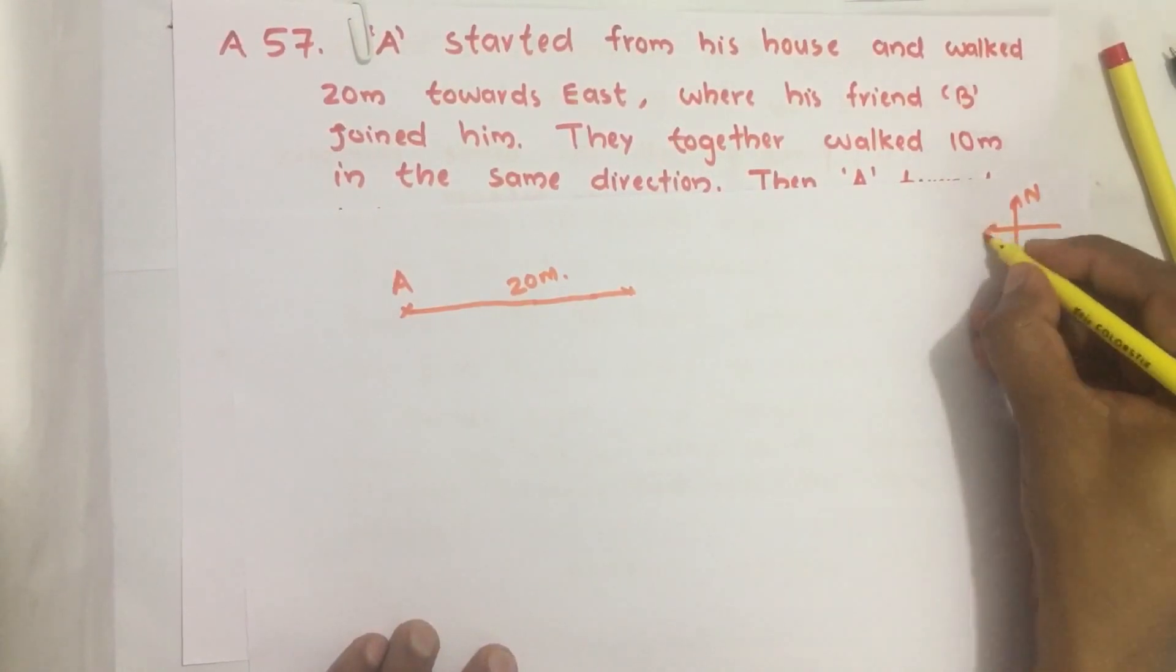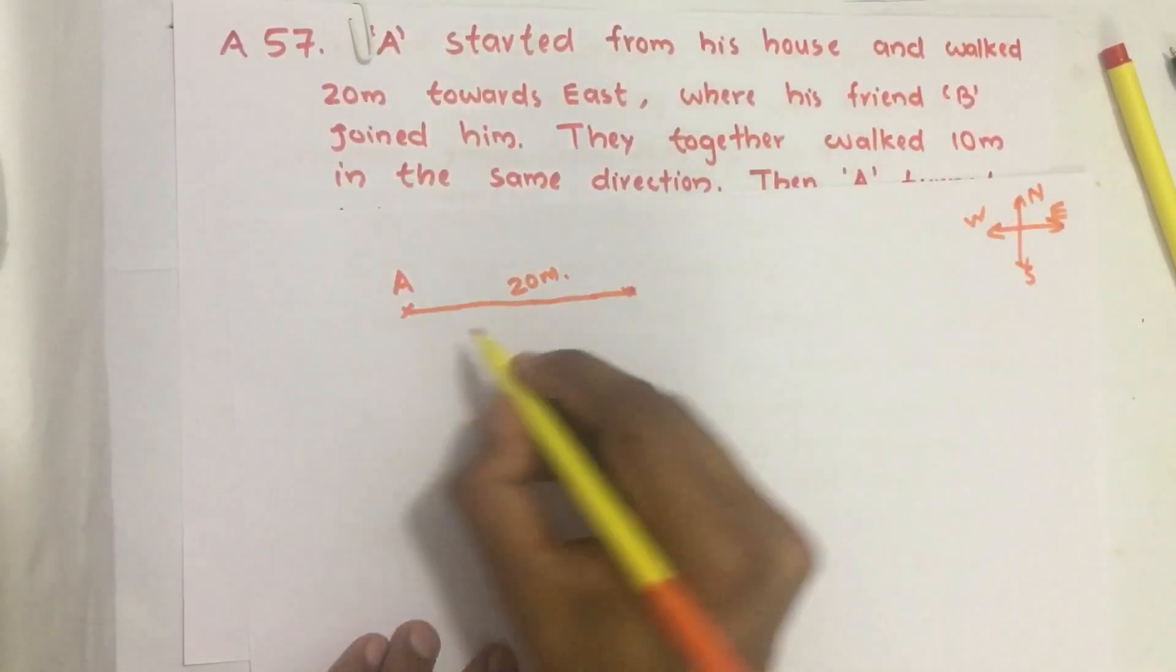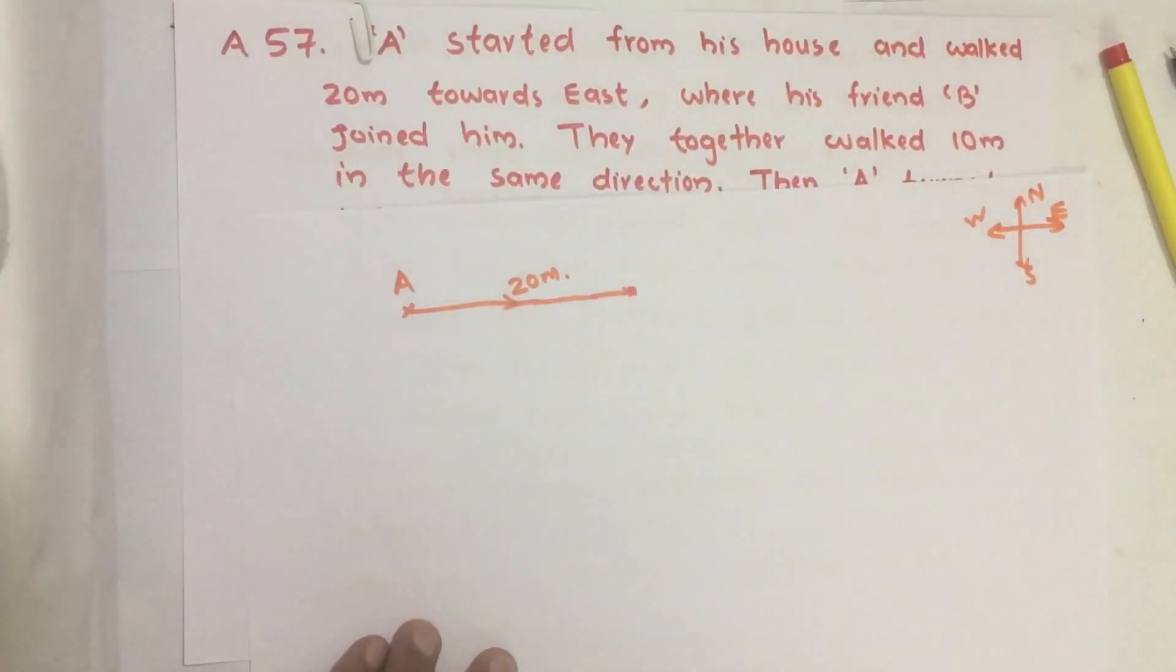Here is north, here is south, west, this is east. So he traveled towards east 20 meters.